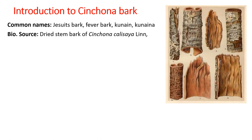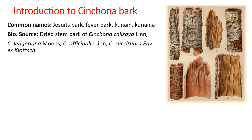Biological source: it consists of dried stem barks of various Cinchona species. Cinchona is a very large genus consisting of various species, of which four species are of medicinal importance: Cinchona calisaya, Cinchona legeriana, Cinchona officinalis, and Cinchona succirubra. These four species are commonly used for their medicinal properties, belonging to family Rubiaceae.